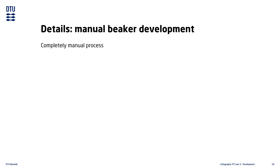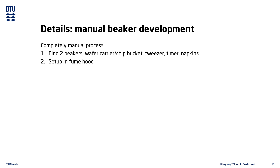The manual beaker development is the development method which requires most work by the user. You start by finding all the necessary equipment and setting it up in a fume hood. Before you pour any chemicals, you must write a chemical identification note. This note must always be next to your beakers and you are not allowed to remove it before you have discarded your chemicals after the process is finished.